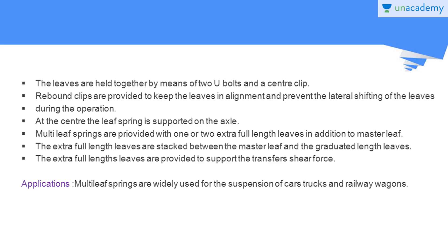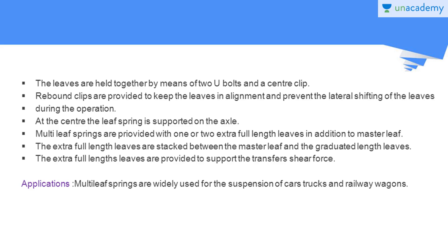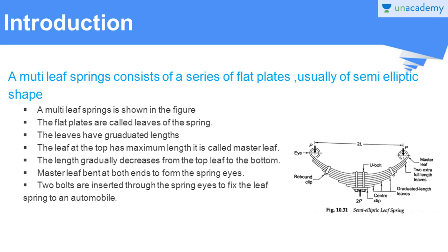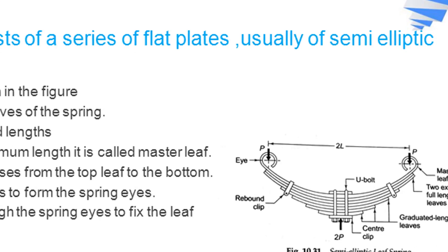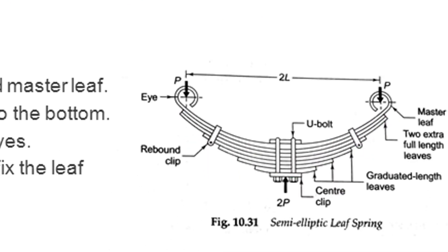At the center, the leaf spring is supported on the axle — here at point A we have the axle. Multi-leaf springs are provided with one or two extra full-length leaves in addition to the master leaf. The extra full-length leaves are stacked between the master leaf and the graduated-length leaves. They are provided to support the transverse shear force, and these two extra full-length leaves are visible in the figure.